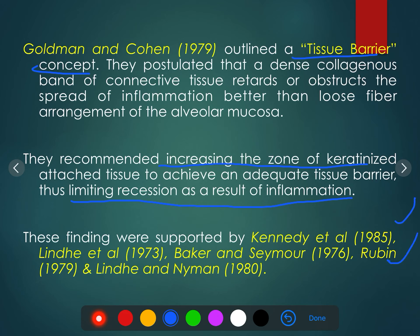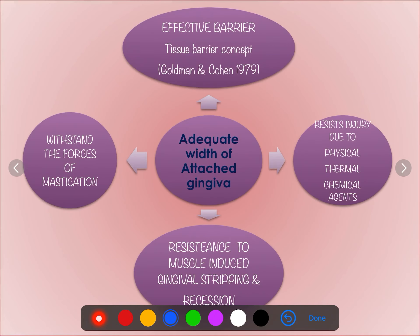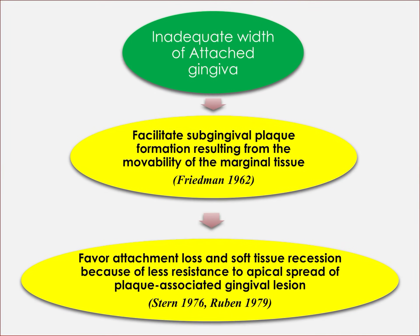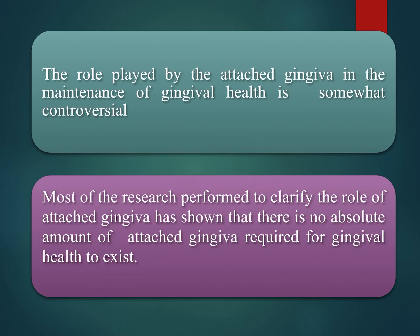You need to write which authors support these statements and which are against them. These authors described the various problems when you have adequate width of attached gingiva — essentially the advantages: an effective barrier is present, it withstands forces, resists injury, and resists gingival stripping and recession. When there is inadequate width of attached gingiva, the disadvantages include facilitation of subgingival plaque formation due to movability of marginal tissue, and favoring attachment loss and soft tissue recession due to less resistance to apical spread of infection.